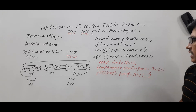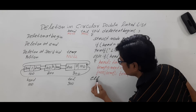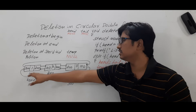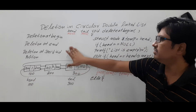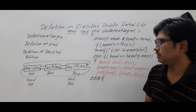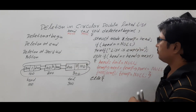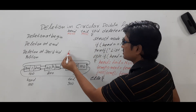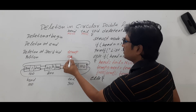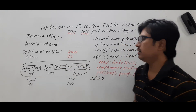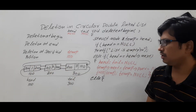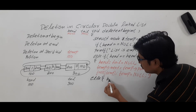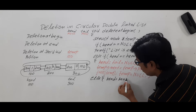Now the else statement handles the case where there are multiple nodes in the list — for example three nodes. Temp holds address 100 pointing to the first node. To delete this node, first move head forward: write head = head->next. Head was 100, head->next is 200, so now head holds 200 pointing to the second node.